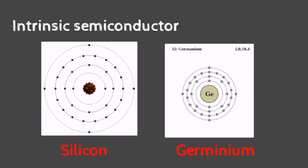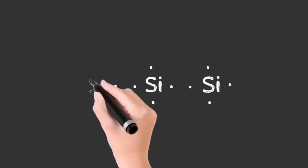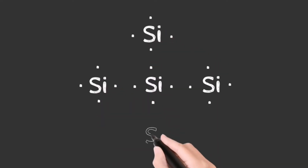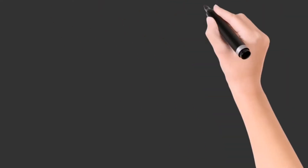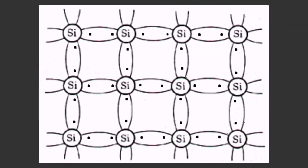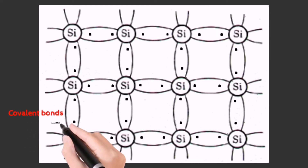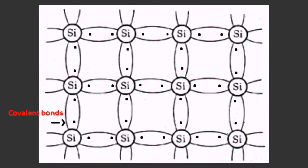We know that the atom needs a total of eight electrons in its outer shell to become stable. All silicon atoms already have four electrons and require an additional four electrons to become stable, which they share with neighboring atoms so that every silicon atom has eight electrons in its valence shell. All these atoms set up a bond with each other, which is called a covalent bond. However, these bonds are very strong and the electron fails to break the bond.